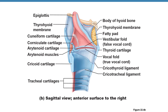In the sagittal view, you can see the epiglottis bending during swallowing. There are also folds visible: the false vocal cords and the true vocal cords, also called vocal folds. The true vocal cords are important in voice production.